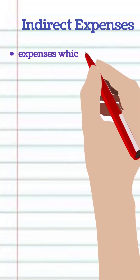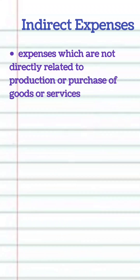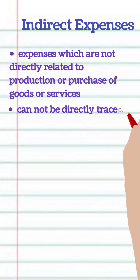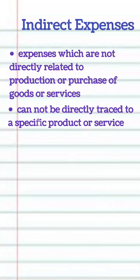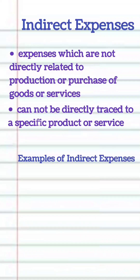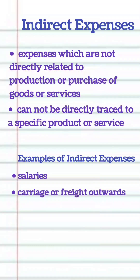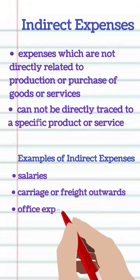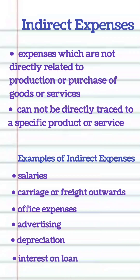Indirect expenses are not directly related to production or purchase of goods or services. They cannot be directly traced to a specific product or service, but support the business as a whole. Examples include salaries, carriage outwards, office expenses, advertising, depreciation, interest on bank loan.